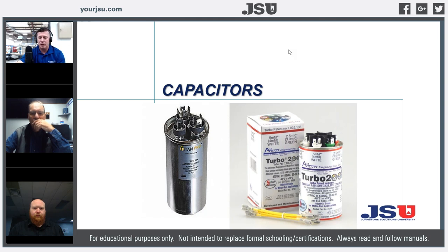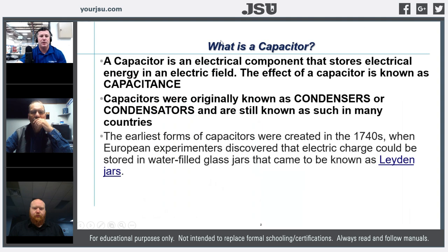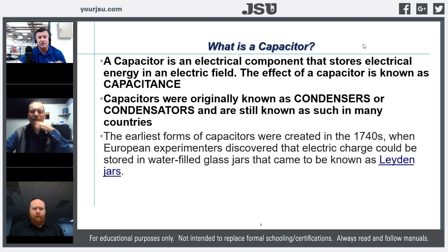If we talk about capacitors in general, we just need to understand what a capacitor is. By definition, a capacitor is an electrical component that stores electrical energy in an electric field. The effect of a capacitor is known as its capacitance. Capacitors were originally known as condensers or condensators — if we work on early automotive ignition systems, we're aware of condensers on a points ignition system, but it was just a capacitor.